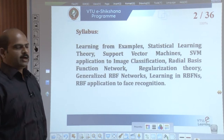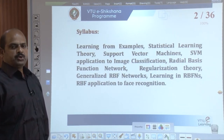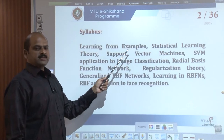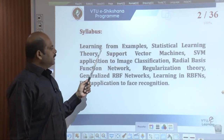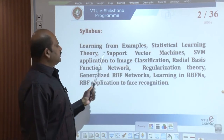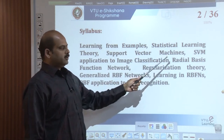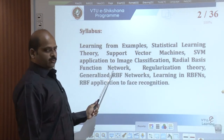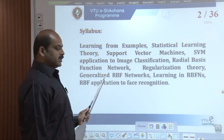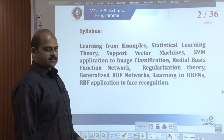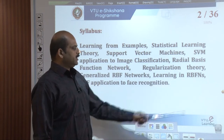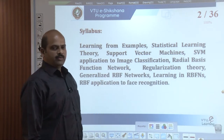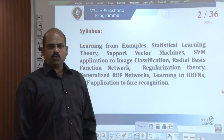In module 3 of Artificial Neural Network, the syllabus includes: statistical learning theory — learning from examples; support vector machines and their applications to image classification; radial basis function networks; regularization theory; generalized radial basis function networks; learning in radial basis function networks and its applications to face recognition. This is the topic we are going to cover in module 3.